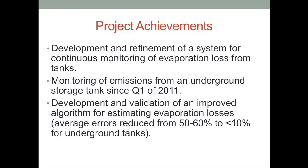The average errors we've seen in the API model have been reduced from 50–60% down to less than 10% for underground storage tanks. If anything, we now tend to overestimate the amount of emissions from underground tanks, whereas the API model was basically predicting half of what we were actually measuring coming off these tanks.